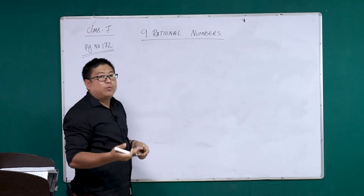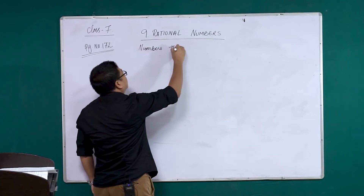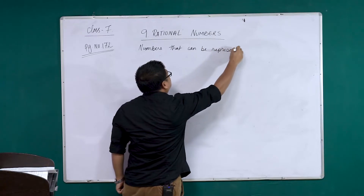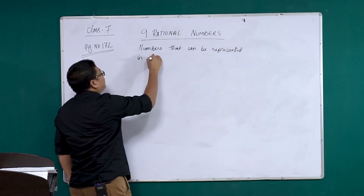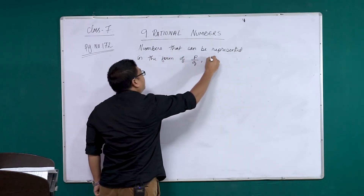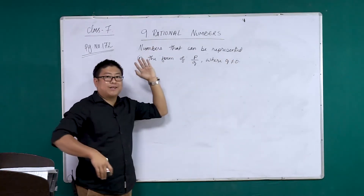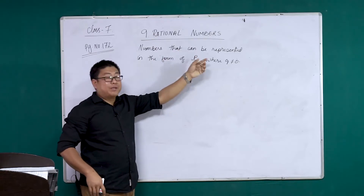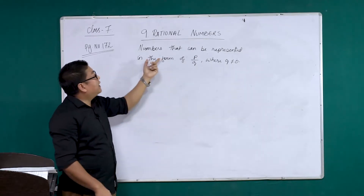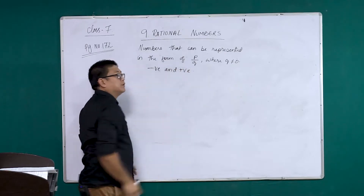Rational numbers, as we all know and have already discussed, are numbers that can be represented in the form P by Q, where Q is not equal to 0. They are simply those numbers which can be represented in this manner. P can be any integer, Q can be any integer. It has positive and negative numbers also.